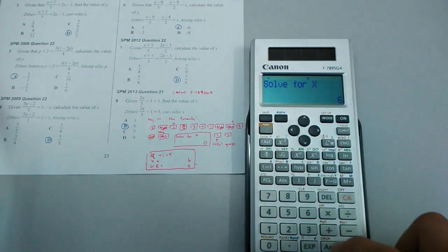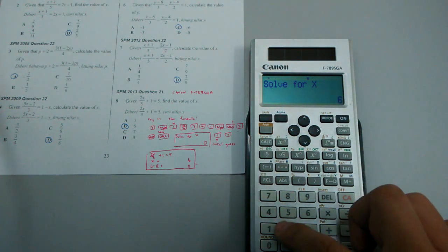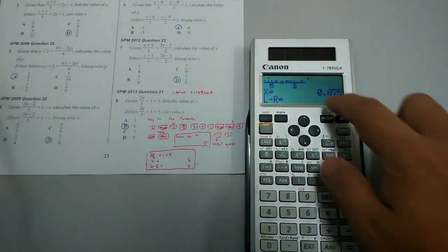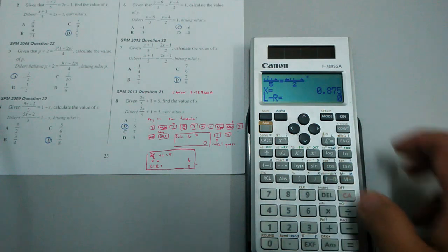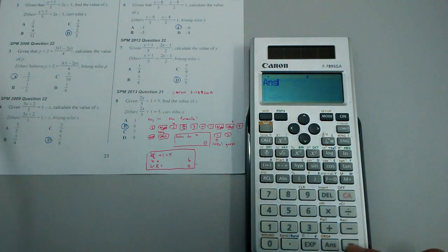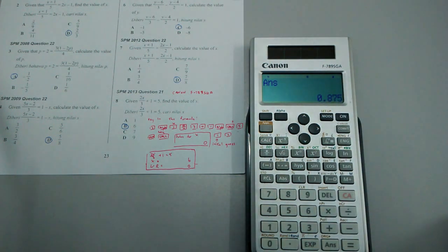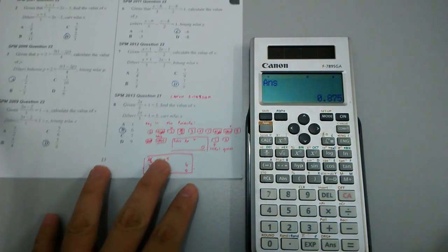Shift solve, solve for x. In this case, I put 1 also. Normally I put 1 and the answer returns 0.875. I press answer equal and it returns 7 over 8, and actually 7 over 8 is 0.875.